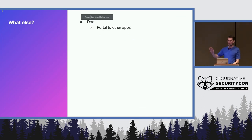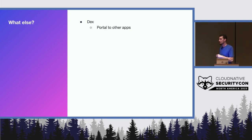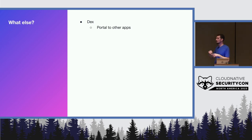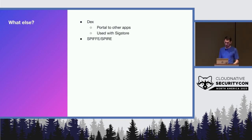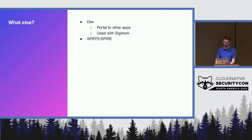Dex is a frontend for other apps. If you go through the Sigstore OAuth flow where I showed signing that git commit, that's actually Dex running behind the scenes. Dex can federate different identity providers to a different application, handling all the attaching and plugging in. SPIFFE and SPIRE are for machine identities — I'm not going to try to explain those because I'm running out of time.